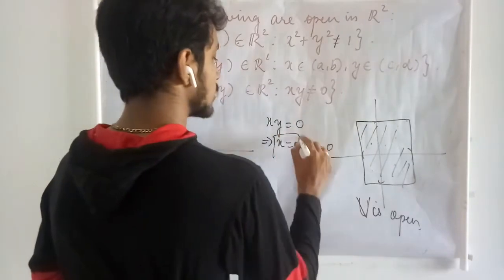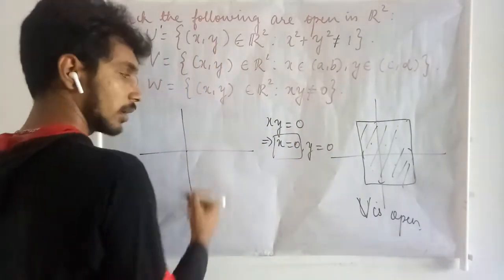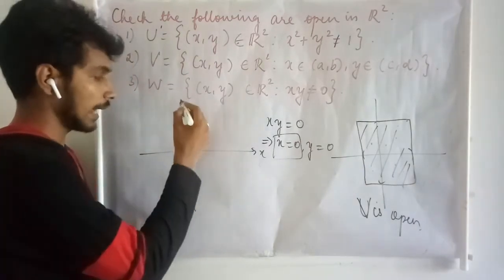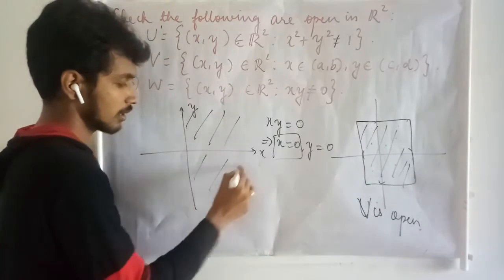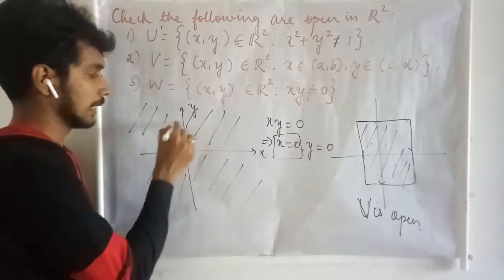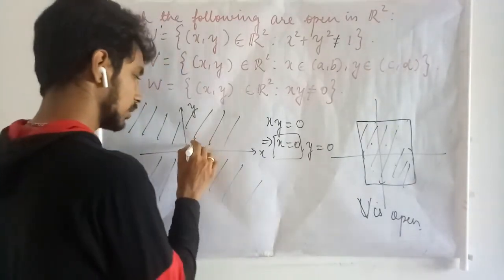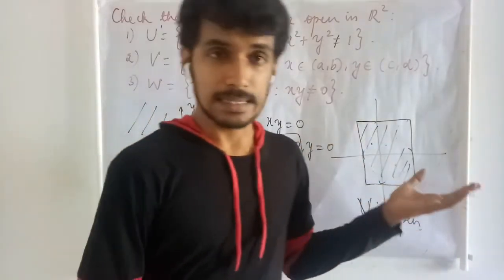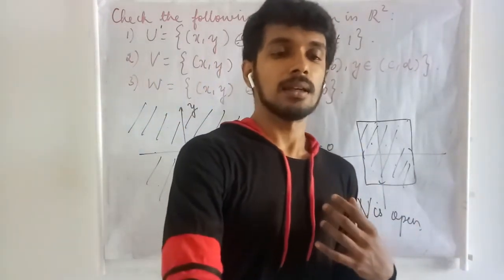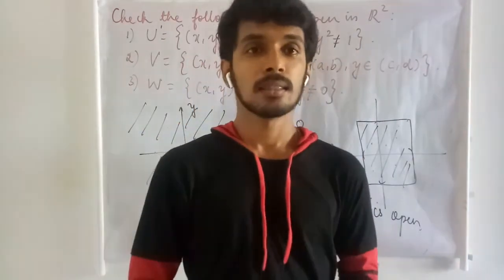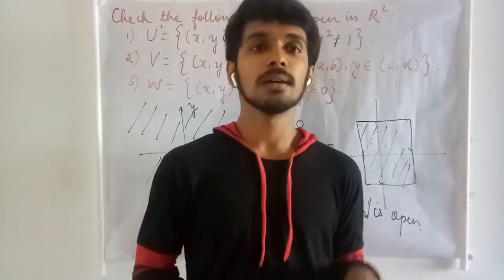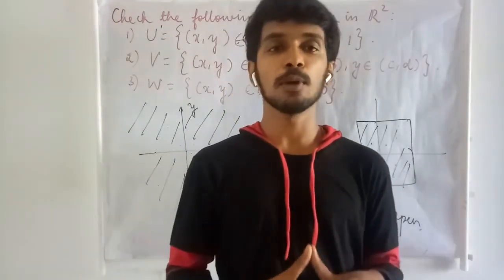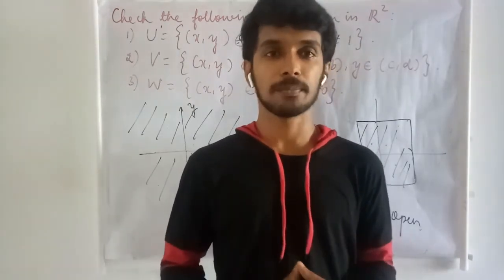xy = 0 when either x = 0 or y = 0, or both. When x = 0 we get the y-axis; when y = 0 we get the x-axis. So we exclude both axes and collect all remaining points — that is set W. For whatever point we choose in W, using the same idea with the standard Euclidean metric, the neighborhood is a circle. We can identify a small positive radius so that the circle is contained in W, proving it is an interior point and W is open.